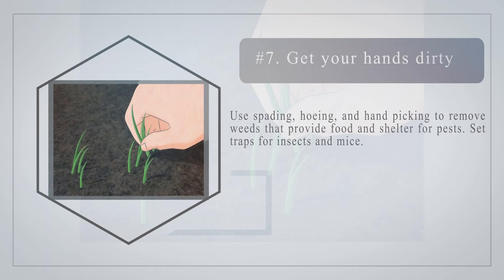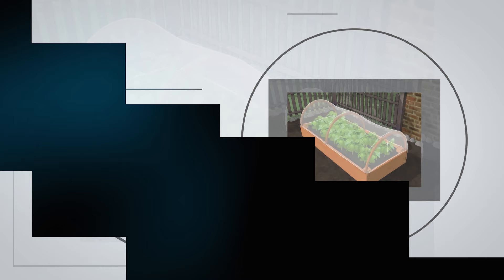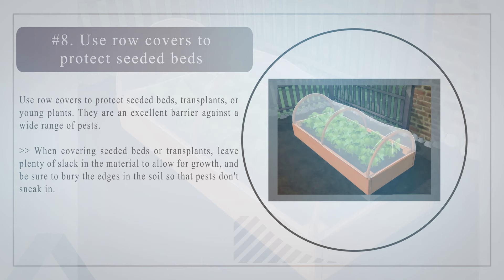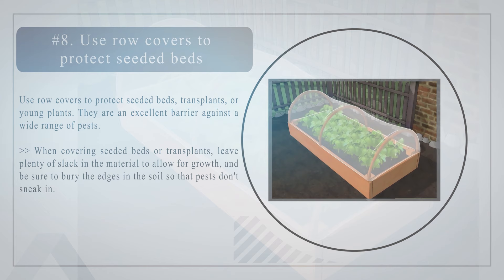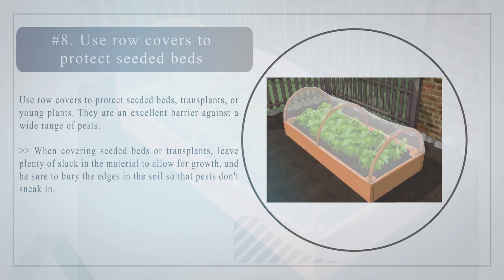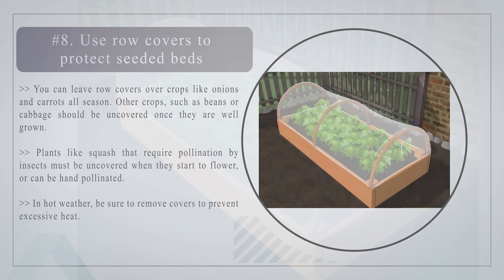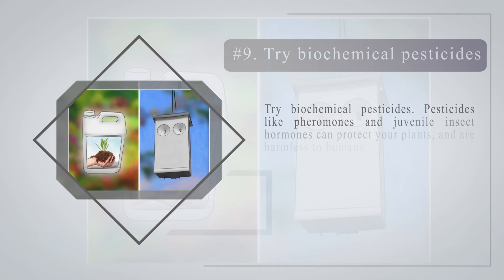Number seven: get your hands dirty. Use spading, hoeing, and hand-picking to remove weeds that provide food and shelter for pests. Set traps for insects and mice. Number eight: use row covers to protect seeded beds, transplants, or young plants — they are an excellent barrier against a wide range of pests. When covering seeded beds or transplants, leave plenty of slack in the material to allow for growth and be sure to bury the edges in the soil so that pests don't sneak in. You can leave row covers over crops like onions and carrots all season; crops such as beans or cabbage should be uncovered once they are well grown. Plants like squash that require pollination by insects must be uncovered when they start to flower, or can be hand-pollinated. In hot weather, be sure to remove covers to prevent excessive heat.